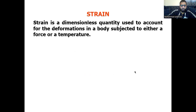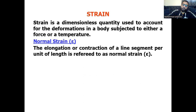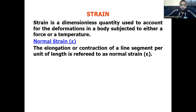When we talk about strain, strain is a dimensionless quantity used to account for the deformation in a body subjected to either a force or temperature. When we apply a load on any body and there is a change, that change is known as strain. We have two types of strain: normal strain and shear strain.